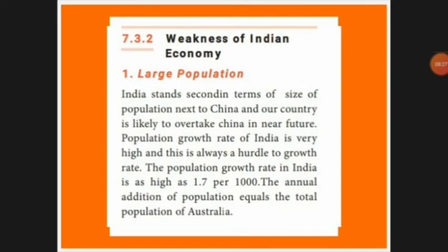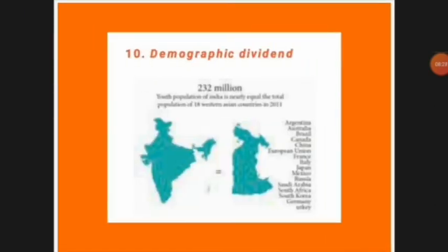Another weakness is inequality and poverty. In India, income and assets are owned by only the top 10% of people. Many more people are living below the poverty line. There is an unequal distribution of national income — the rich become richer while the poor remain poor.